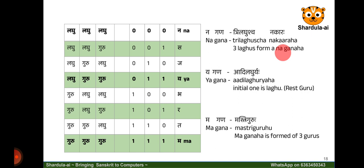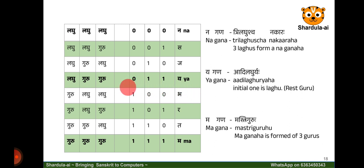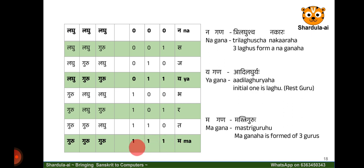In this poem, we are going to be interested in only three Ganas. The first is Yagana, which is laghu, guru, guru — the first word takes less time and the subsequent words take more time. Then we are interested in Magana, where each of the words takes more time: guru, guru, guru.